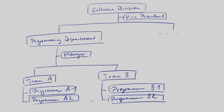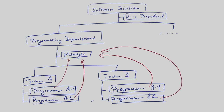And now we have the reports-to relations. Programmer A1 reports to the manager, as does Programmer A2. And the manager reports to the vice president. Note that this reports-to relation doesn't have to follow the org structure.